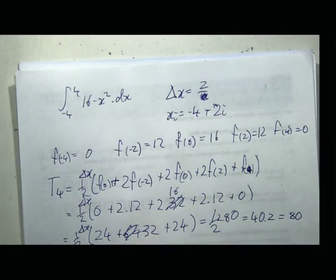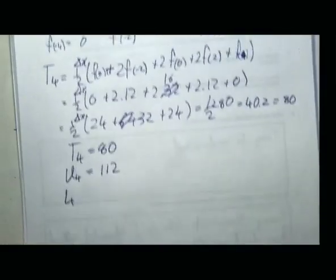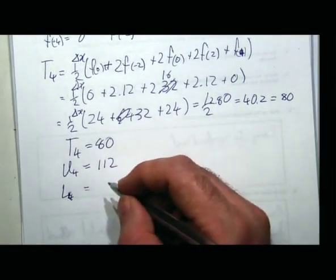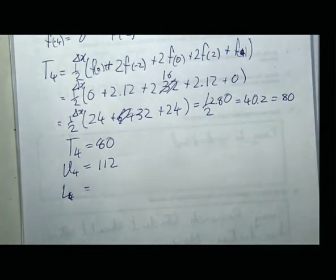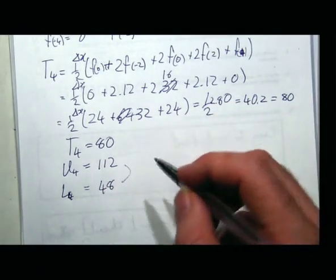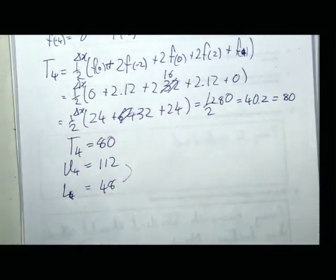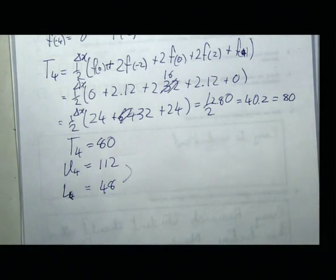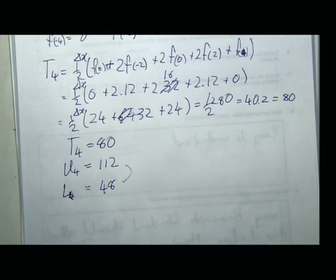My upper sum on four intervals gave 112 and my lower sum on four intervals gave 48. If I literally average those two I get 80 — the trapezoidal rule is exactly that average. The trapezoidal rule gives a better approximation for the actual value, but it is no longer either an upper bound or a lower bound — it is just an approximation for the area.